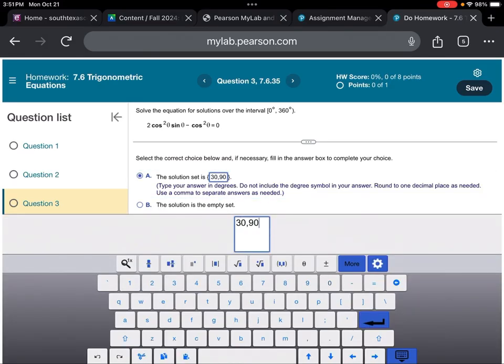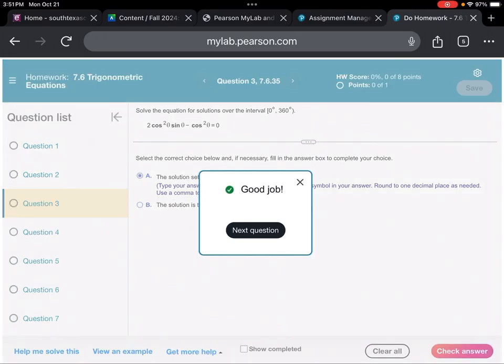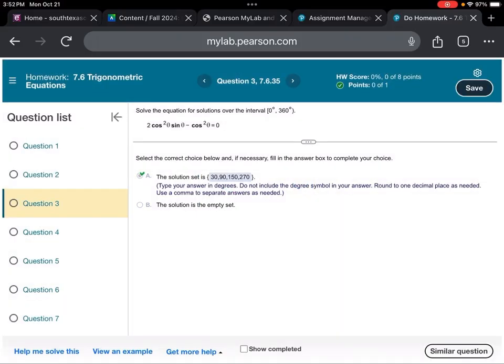30, 90, 150, 270. Enter that in, and we got it. That was how I did number three.